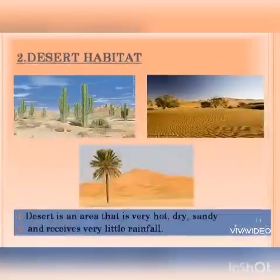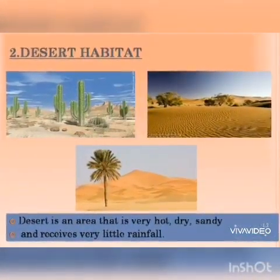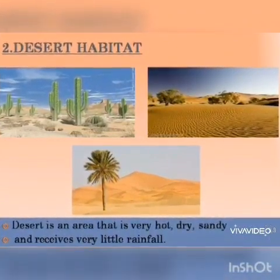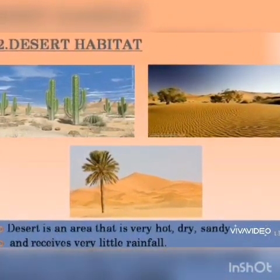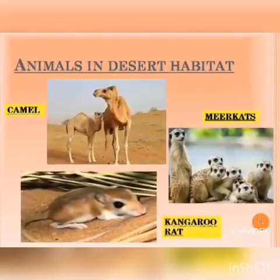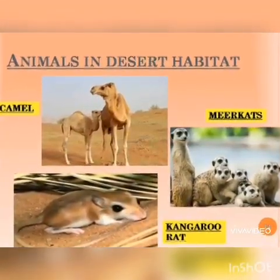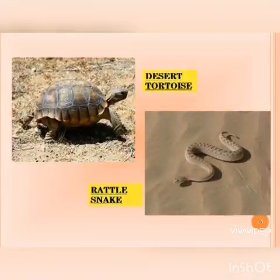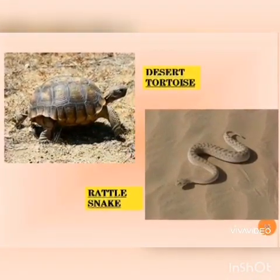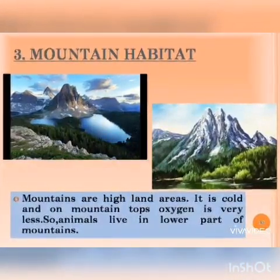Another type of terrestrial habitat is desert habitat. A desert is a place that is very hot, dry and sandy and it receives very little rainfall throughout the year. Animals living in this area can survive without water for a longer period of time, like camel, kangaroo rat, meerkats, desert tortoise and rattlesnake.